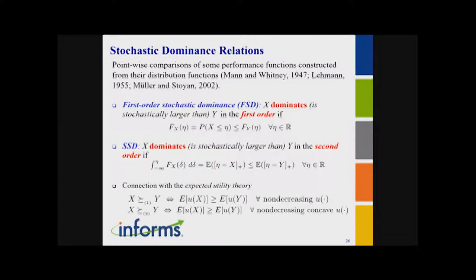The reason I picked these dominance orders is their interesting connection to utility theory. If X is preferred to Y in first-order dominance, it means any rational decision maker would prefer X — it satisfies expected utility for any non-decreasing utility function. Dominance-based optimization receives attention because I don't need to guess the utility function; I guarantee superiority for a large class of utility functions. In the second-order case, the utility functions considered are non-decreasing and concave — so if you satisfy second-order dominance, any risk-averse decision maker will prefer X to Y.